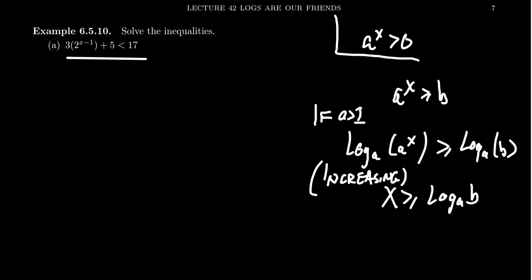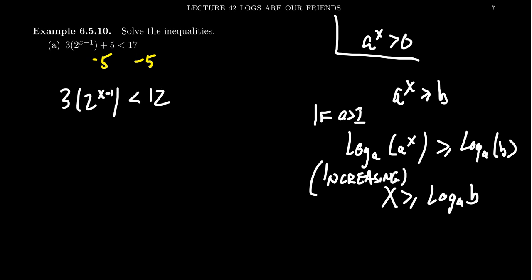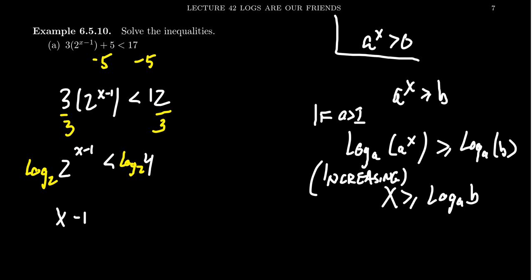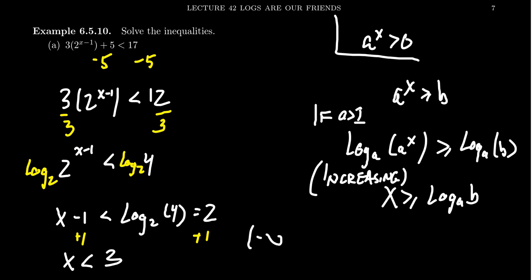Looking at this example: 3 times 2 to the (x minus 1) plus 5 is less than 17. Start by subtracting 5 from both sides — that doesn't change the inequality — giving 3 times 2 to the (x minus 1) is less than 12. Next, divide both sides by 3; dividing by a positive number doesn't change the direction, giving 2 to the (x minus 1) is less than 4. Now take log base 2 of both sides. Since the base is greater than one, this is an increasing exponential and its inverse is an increasing logarithm, so the direction doesn't change. We get x minus 1 is less than log base 2 of 4, which is 2. Adding 1 to both sides gives x less than 3, or in interval notation: negative infinity to 3, non-inclusive.